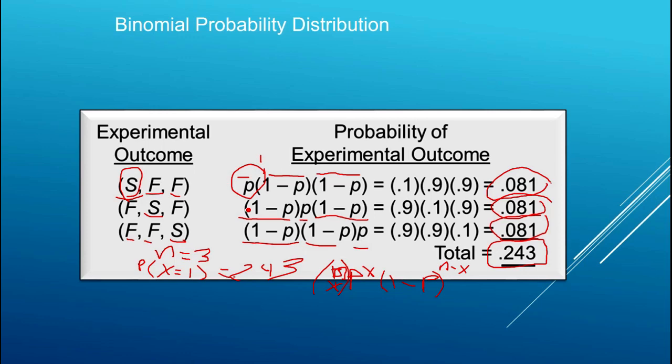The formula for the probability function for a binomial experiment is very easily understood. It may look complicated at first, but if you step back and think about the experiment, the sample space, and how the random variable is defined, it's quite easy to see how the formula arises. Many other probability distributions can be understood just as simply.